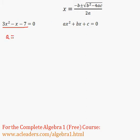And to get started, let's determine a, b, and c. So a in this case is 3, b is negative 1, and c is negative 7.